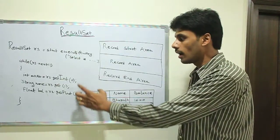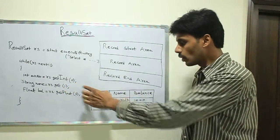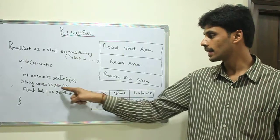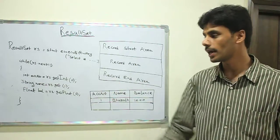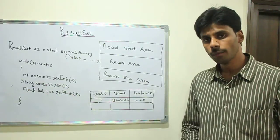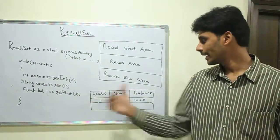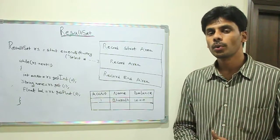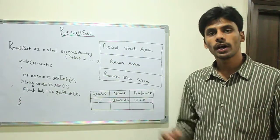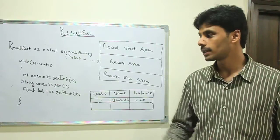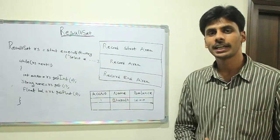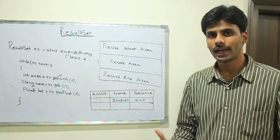To get the name, I say getString(1), which returns a string value. The index 2 will return the balance value. Once we move to each record, we use the getXXX methods: getInt for integers, getFloat for floats, and getString for strings. We retrieve the values and process them however we want in our Java application.